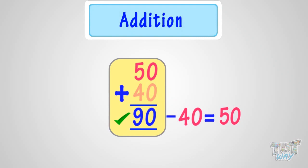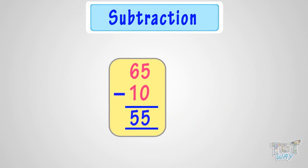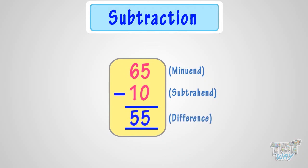Now let's move on to learn checking our subtraction problems. Here is a subtraction problem. First of all, 65 is the minuend — that is, the number from which we subtract. 10 is the subtrahend — that is, the number that is to be subtracted. And 55 is the difference between the minuend and the subtrahend.